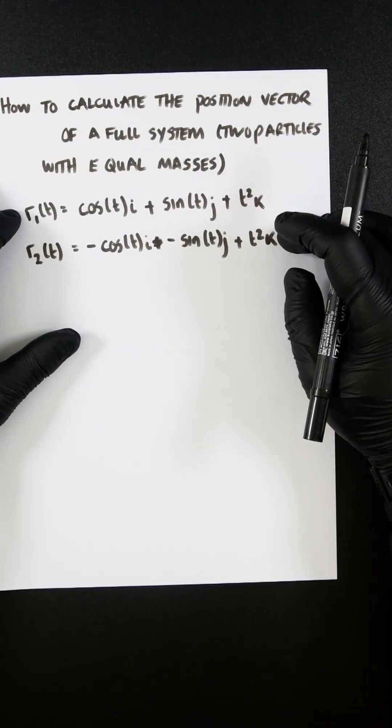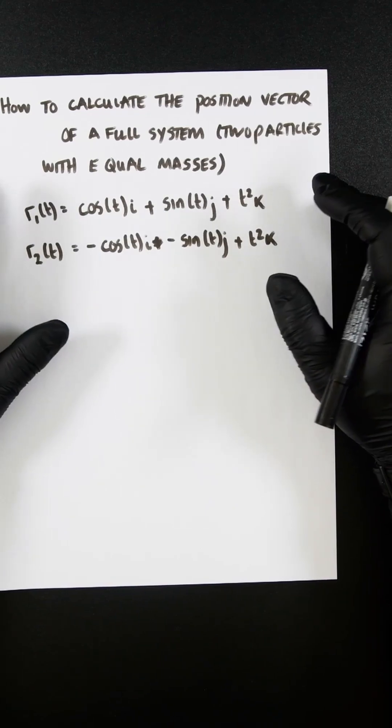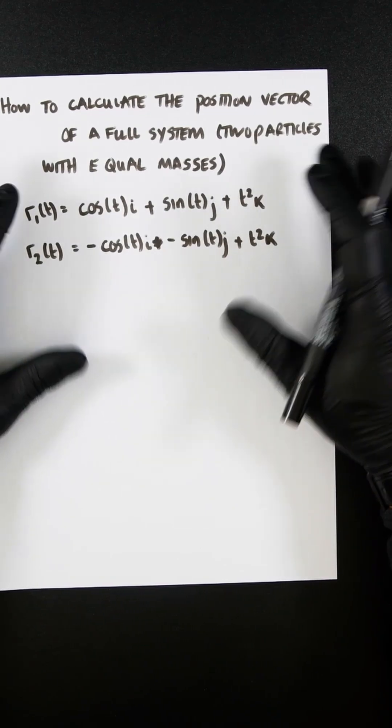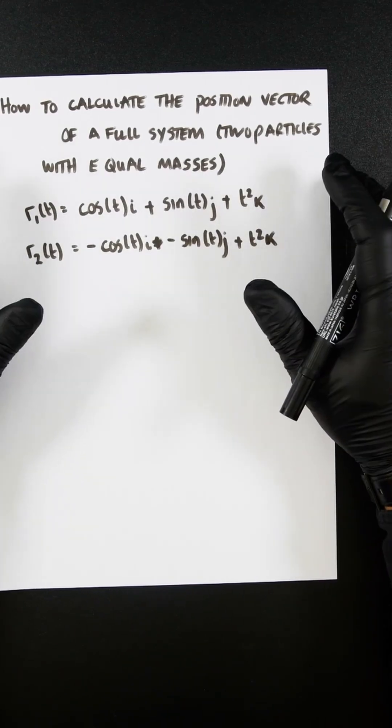We're given two position vectors of two individual masses. We're going to find out what the position vector is of the entire system, where both particles have equal masses.